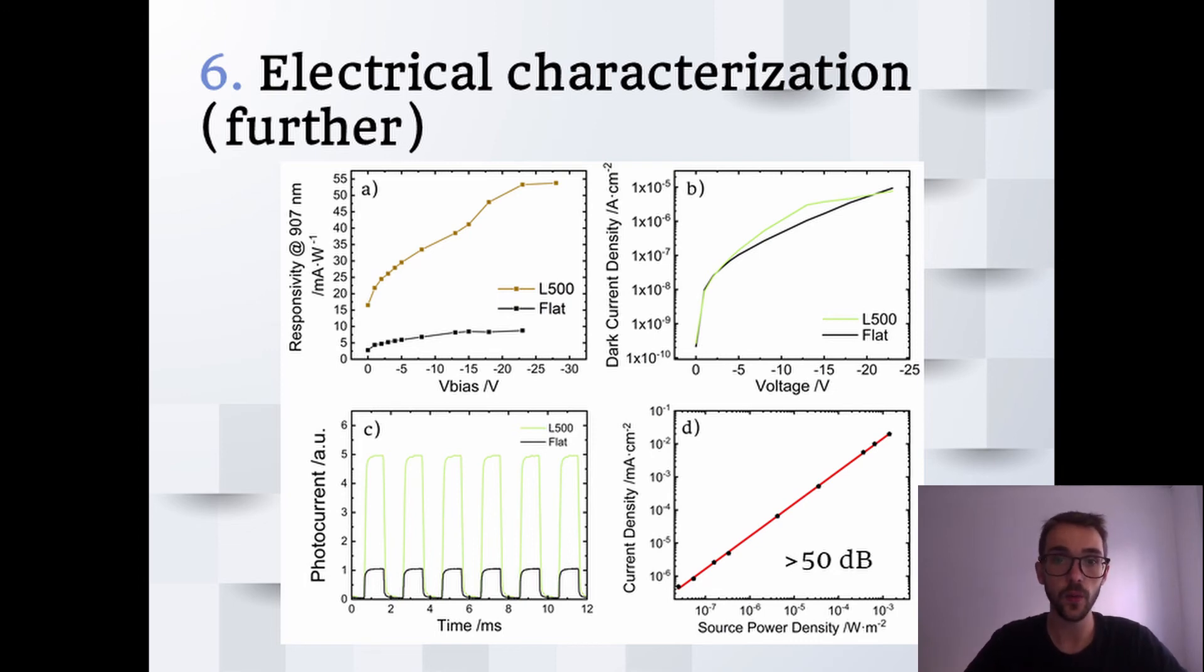That means that we can be pretty confident that the amount of charges generated on the nanostructured photodetector is significantly higher. We can also see that the dark currents are always more or less on the same order of magnitude, which indicates that the nanostructuring process is not hindering the device performance. We can also see that the time response is approximately the same and the device's linear dynamic range is greater than 50 dBs.